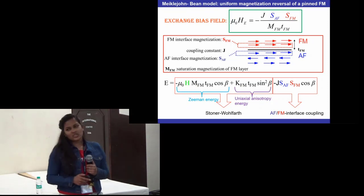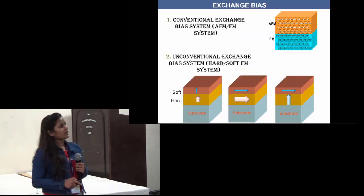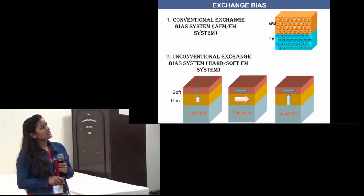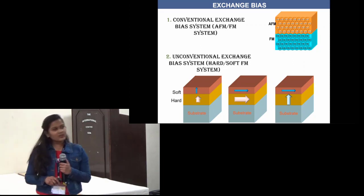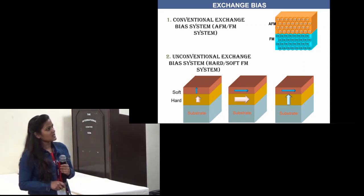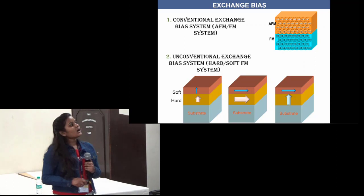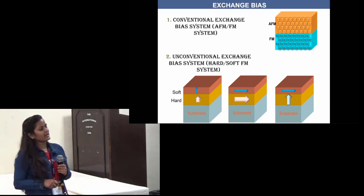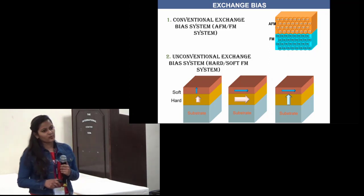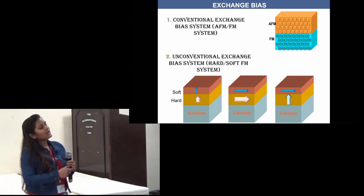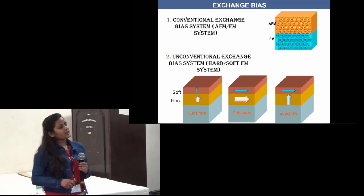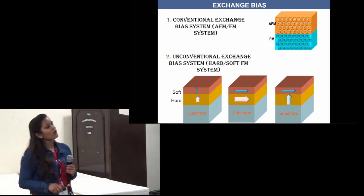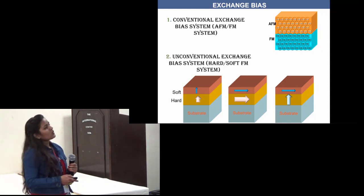There are many systems in which exchange bias has been observed, but mainly there are two: the conventional exchange bias system, which is the antiferromagnetic/ferromagnetic system, and the unconventional exchange bias system, which is the hard-soft ferromagnetic system. These are further categorized into two categories: one where both ferromagnetic layers have collinear magnetic anisotropy — either out-of-plane or in-plane — and another where the soft layer and hard layer have orthogonal magnetic anisotropy.